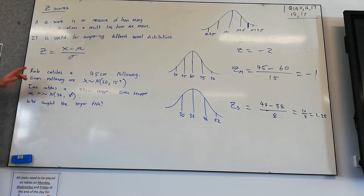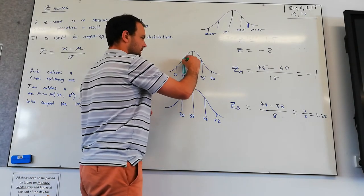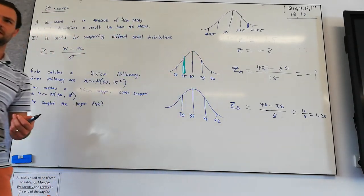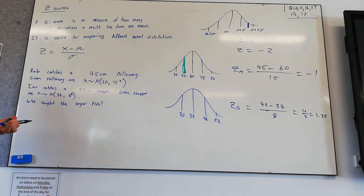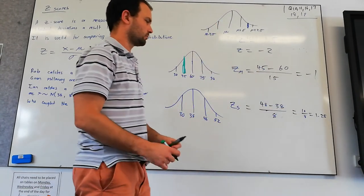And Rob, Rob's fish was bigger. His was 45cm. So you might say, well, he caught the bigger fish. But let's look at what's relatively better. So Rob got a 45cm mulloway, which is one standard deviation below the mean. So it's like a less than average fish. It's a small one. He's got a z-score of minus 1. He's one standard deviation below the mean.